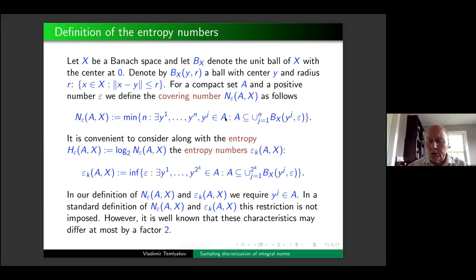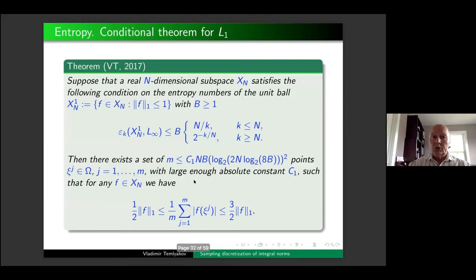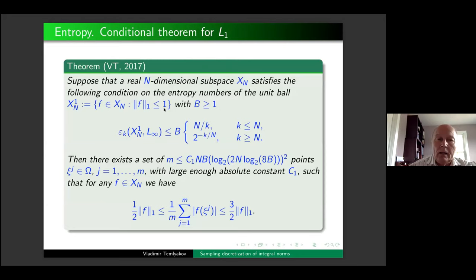The entropy number epsilon_k corresponds to covering by 2^k points. The conditional theorem was first proved in L_1 using one technique; we later invented another technique to extend to L_q with q > 1, and the formulation turned out to be the same.